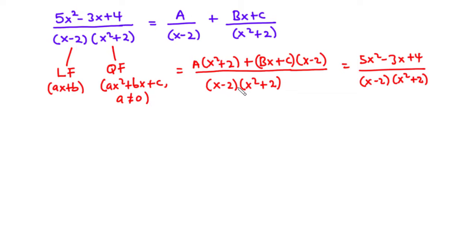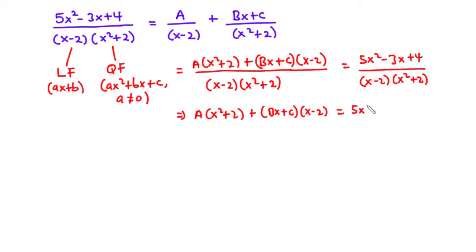Since the denominator is the same on both sides, we have: A times (x squared plus 2) plus (Bx plus C) times (x minus 2) equals 5x squared minus 3x plus 4. We have the factor (x minus 2), so if we put x equals 2, then 2 minus 2 equals 0, and we can eliminate that term and focus on finding the value of A.